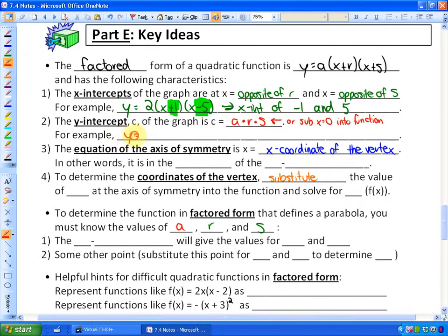Let's use the same example. If we had the function y = 2(x+1)(x-5), let me substitute x = 0 into the function. So that would be y = 2(0+1)(0-5), which simplifies to y = 2(1)(-5). That gives you a y-intercept of -10, because those values multiply to -10.